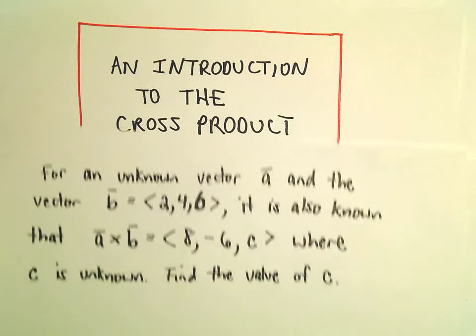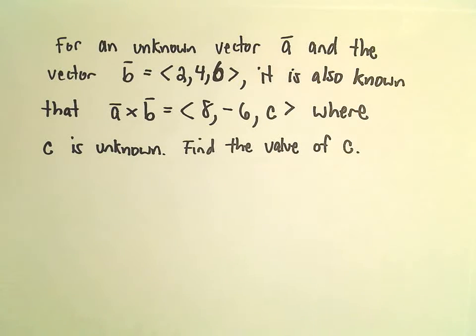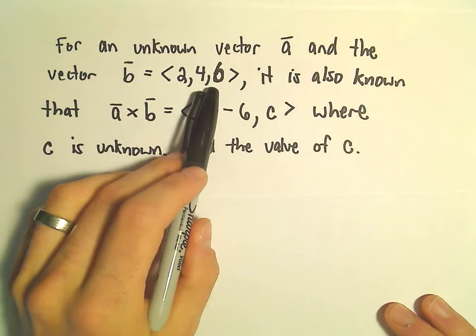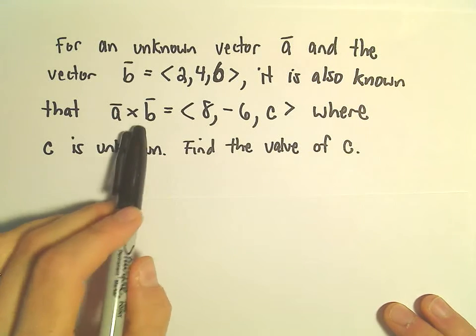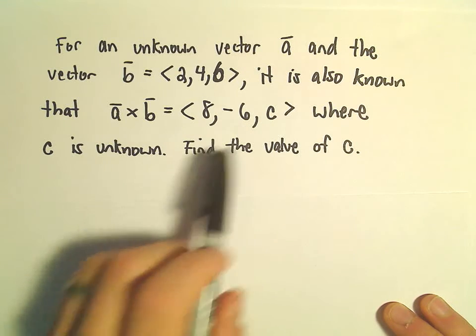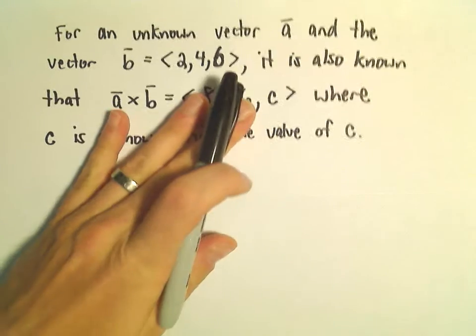All right, so just another question here related to the cross product. We've got some unknown vector A and the vector B. Vector B has the components 2, 4, 6. We know that the cross product has components 8, negative 6, c. C is unknown. We want to find that value of c.